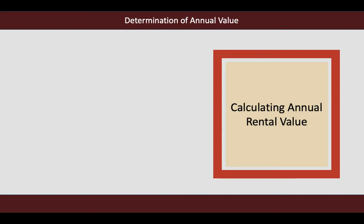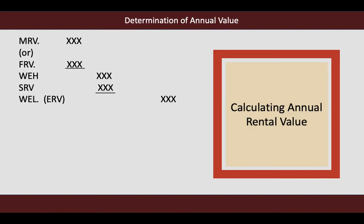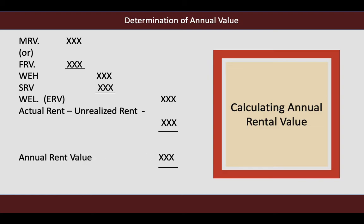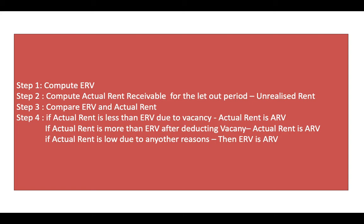Determination of annual value: take municipal rental value, compare it with fair rental value, take whichever is highest, then compare with standard rent and take whichever is less — that is the expected rental value. From actual rent deduct unrealized rent; compare with expected rental value and take whichever is highest — that is the annual rental value. When there is a vacancy period: Step 1, compute expected rental value. Step 2, compute actual rent receivable for the let-out period and deduct unrealized rent if any.